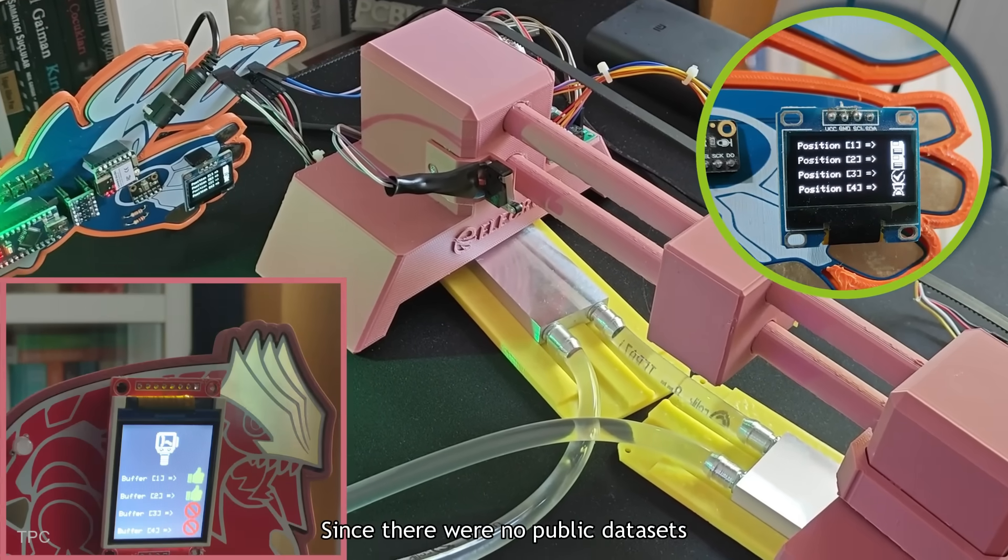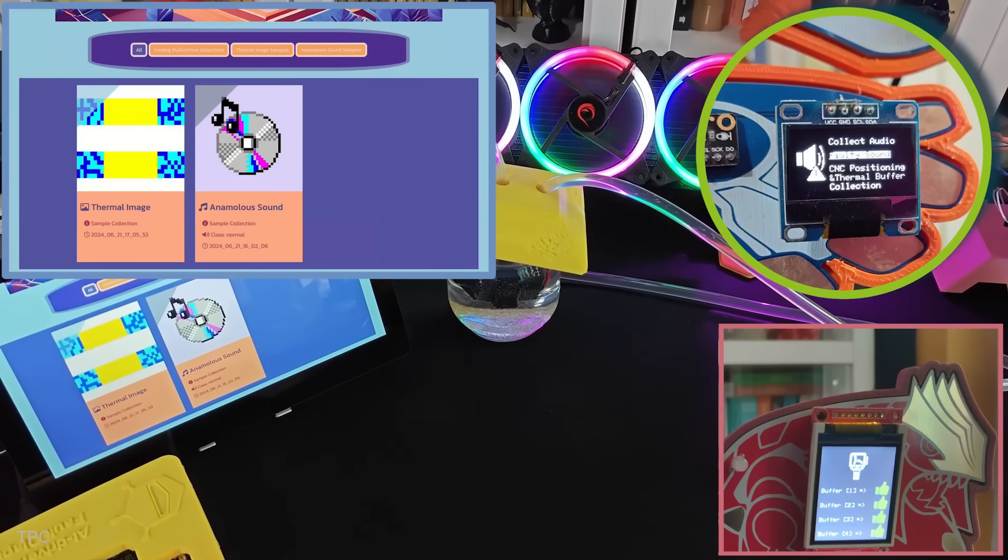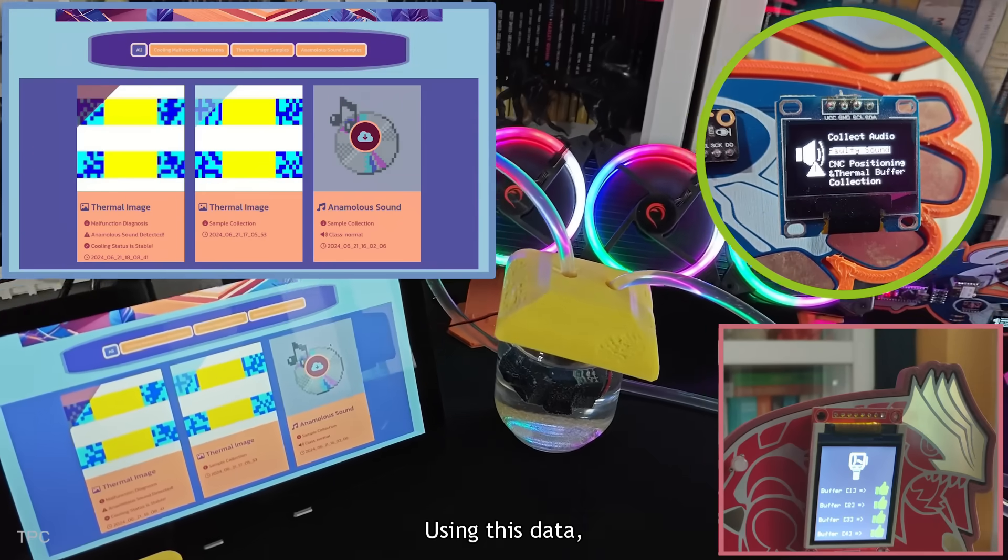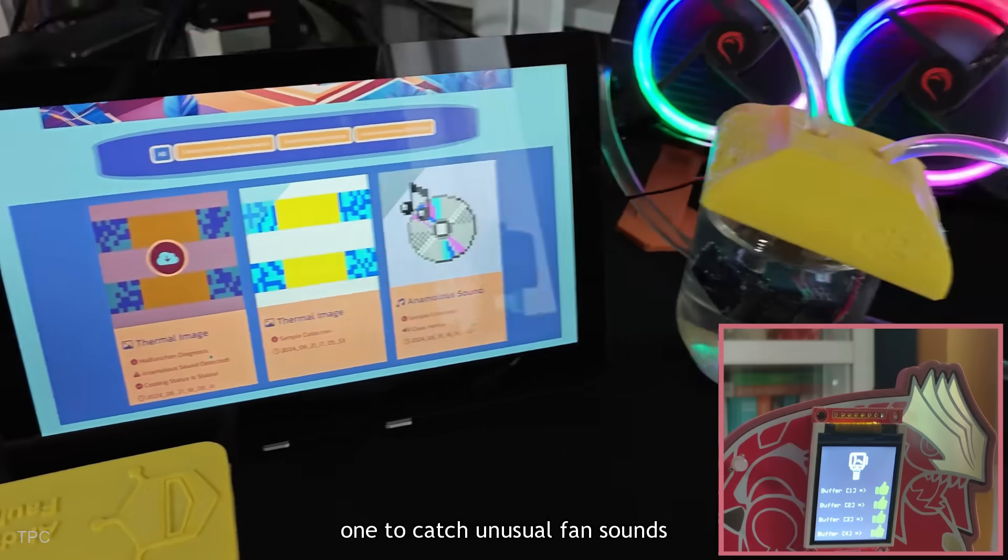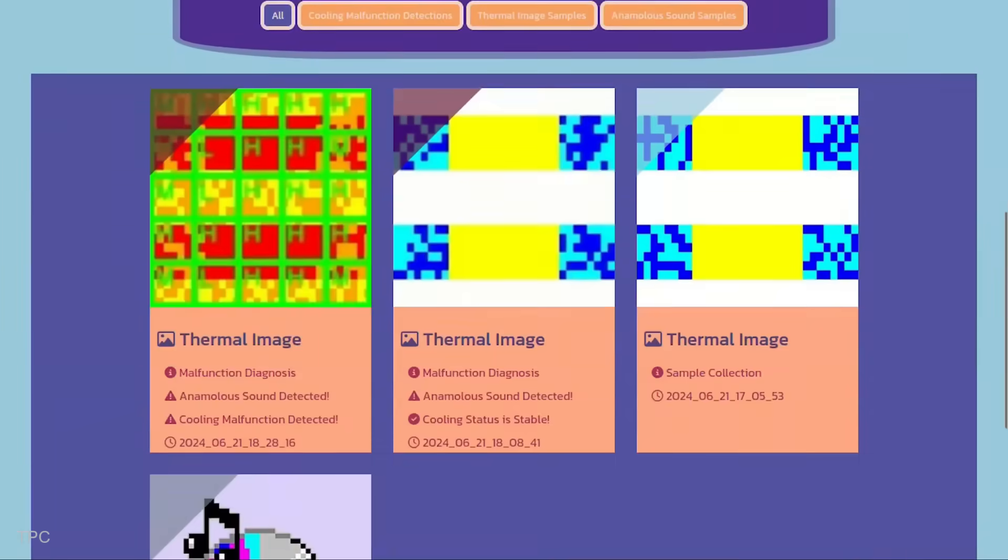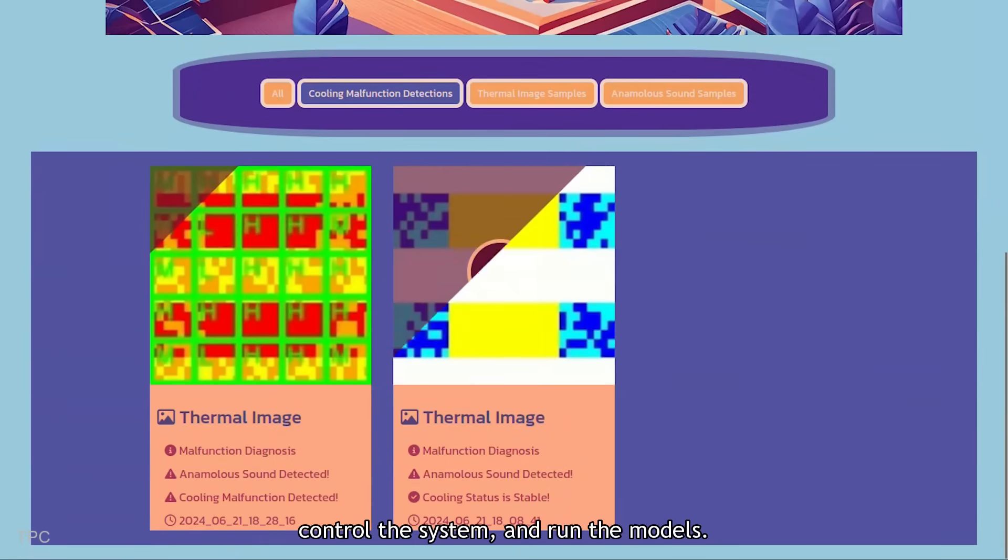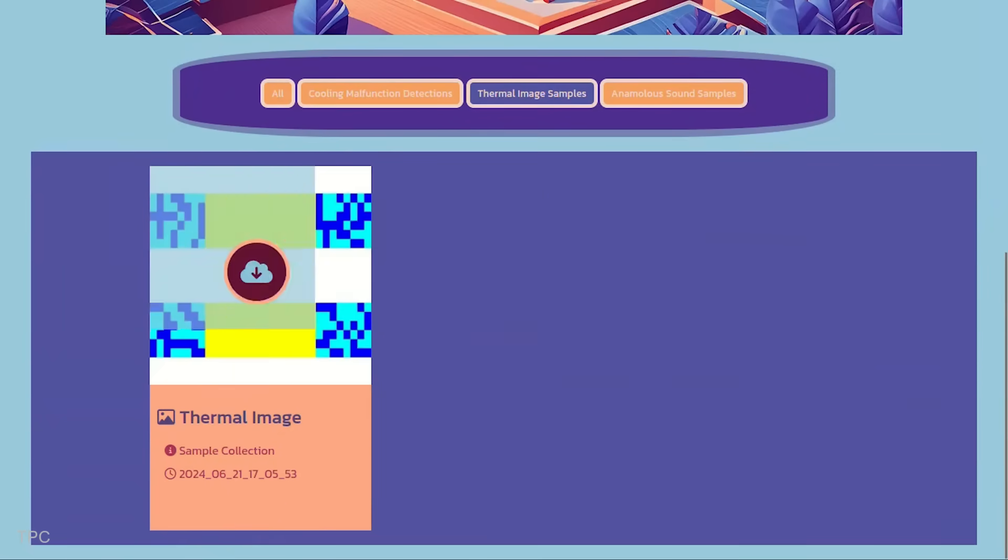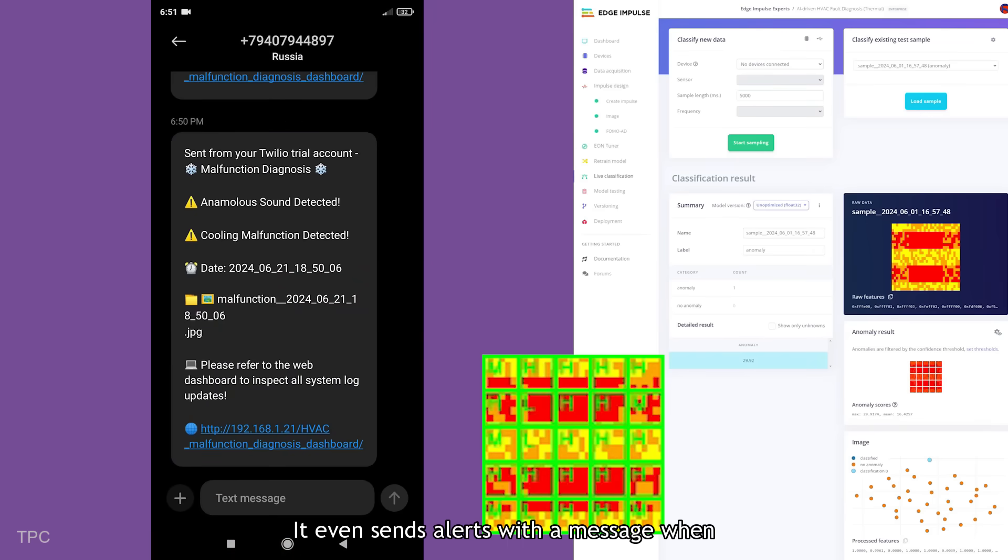Since there were no public datasets available, he created his own by simulating hardware failures. Using this data, he trained two machine learning models, one to catch unusual fan sounds, and another to detect heat issues from thermal images. He also made a custom web dashboard to manage data, control the system, and run the models. It even sends alerts with a message when something goes wrong.